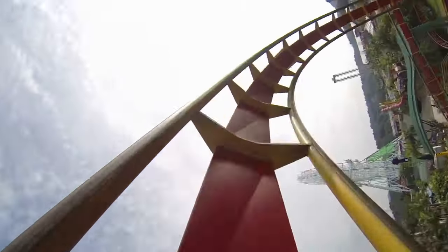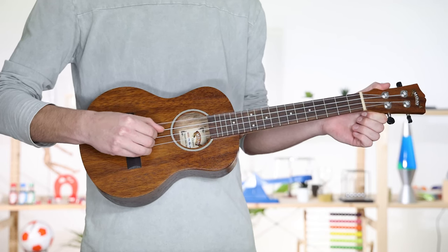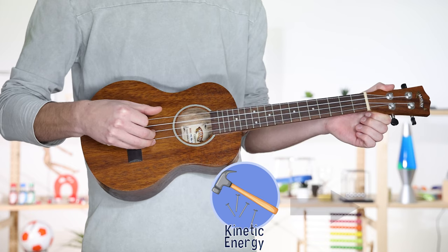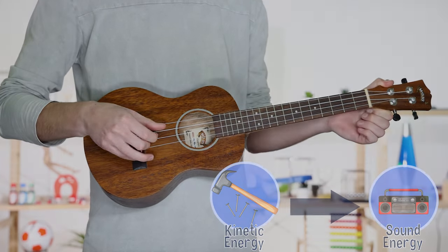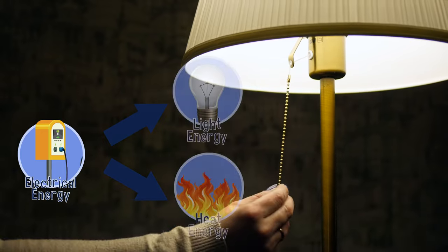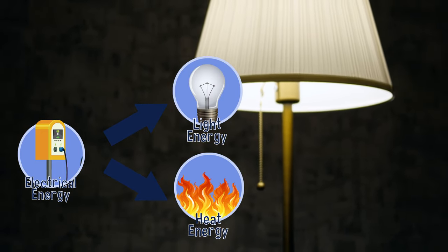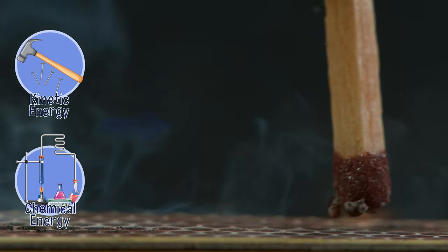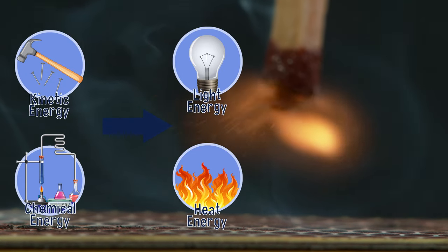How'd you go? Let's take another look. When a ukulele is strummed, kinetic energy is transformed into sound energy. When a light bulb is switched on, electrical energy is transformed into light and heat. When a match is struck, kinetic energy and chemical energy are transformed into light and heat.